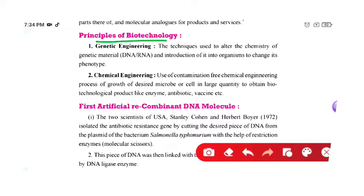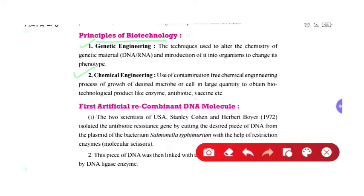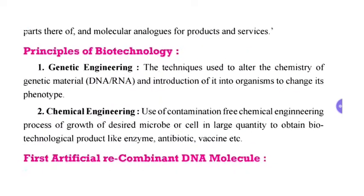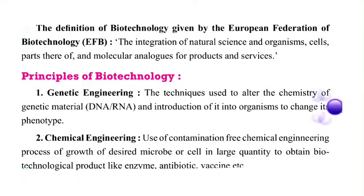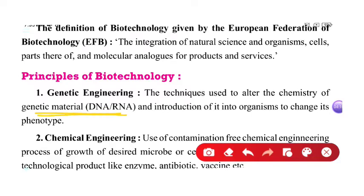Now let's look at the principles of biotechnology. There are two kinds of principles: genetic engineering and chemical engineering. These two terminologies are completely different from each other. Genetic engineering refers to the techniques used to alter the chemistry of genetic material — DNA and RNA — and introduce it into organisms to change their phenotype, meaning their physical appearance.